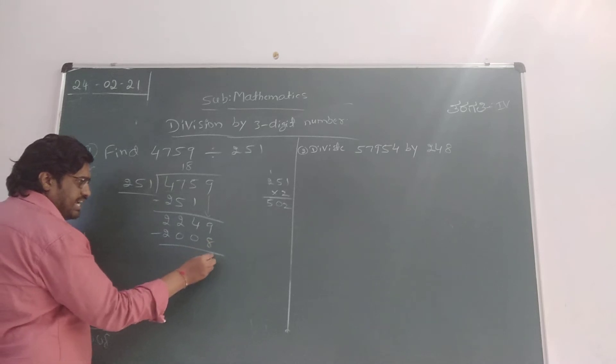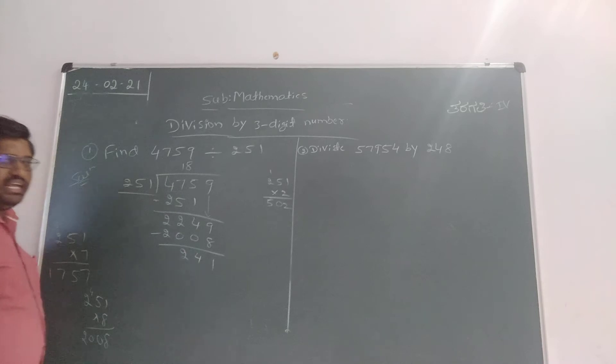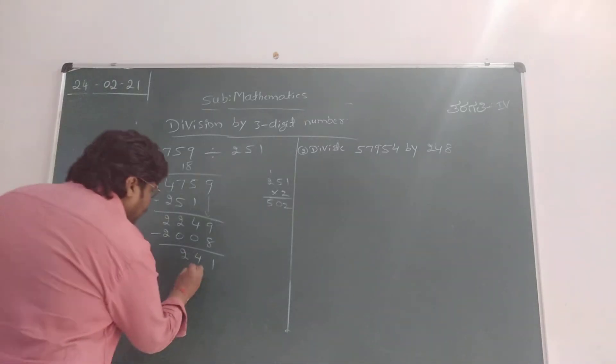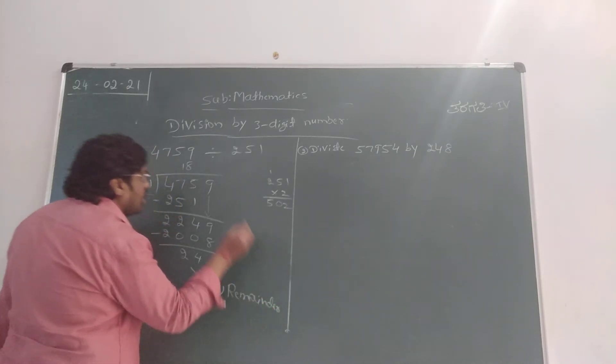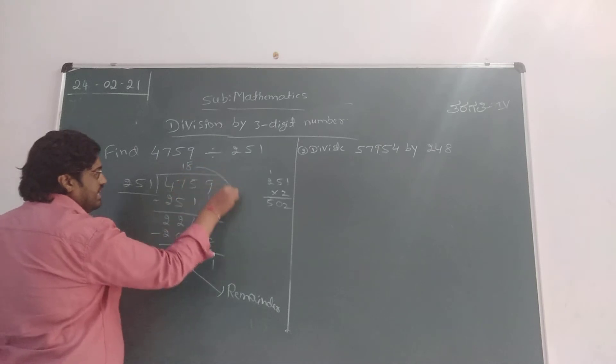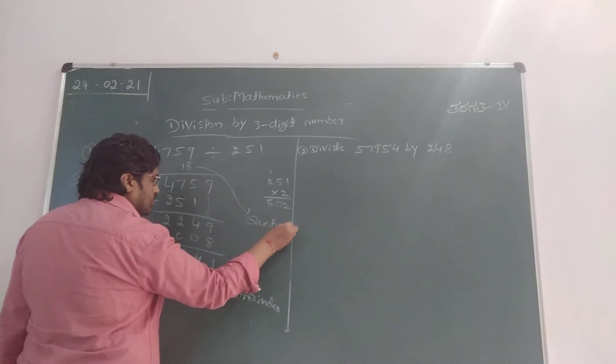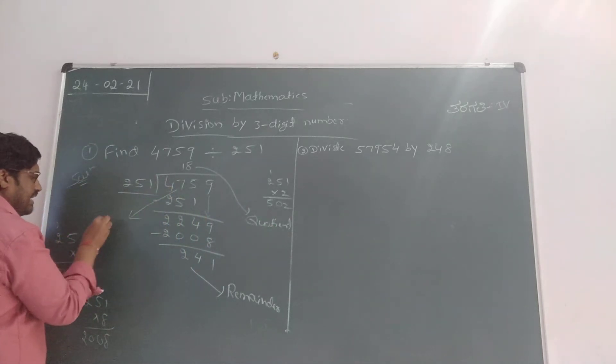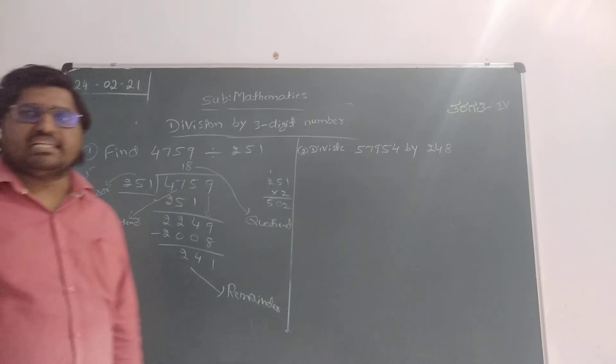So you can take 251 times 8: 2008. Subtract: 9 minus 8 is 1, 4 minus 0 is 4, 2 minus 0 is 2. Therefore the final remainder is 241. Here 241 is called the remainder, 18 is called the quotient. And as we know, 4759 is the dividend and 251 is called the divisor.